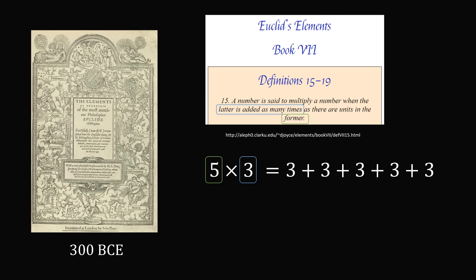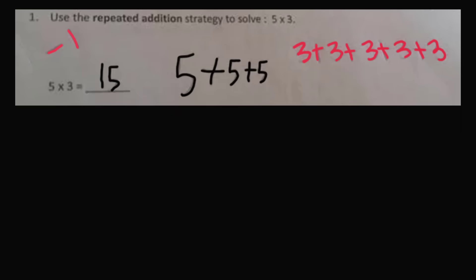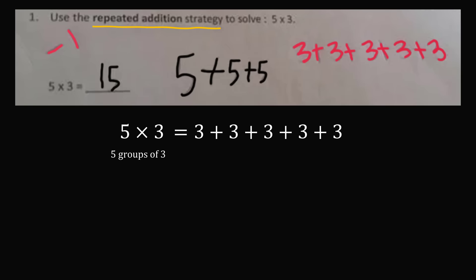So now let us return to the supposed new math of Common Core. We need to use the repeated addition strategy to solve 5 times 3. It doesn't matter who you are — whether you are Euclid, Euler, or a student today. Using the repeated addition strategy, 5 times 3 means 5 groups of 3, so we have 5 terms where each term equals 3: 3 plus 3 plus 3 plus 3 plus 3. That would be the literal interpretation. If instead you wrote 5 plus 5 plus 5, that corresponds to 3 times 5, which represents 3 groups of 5.